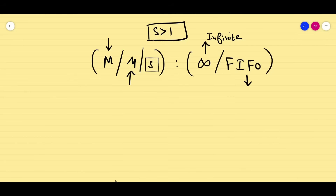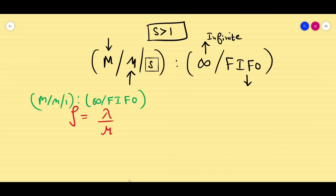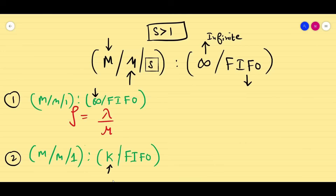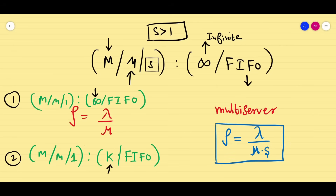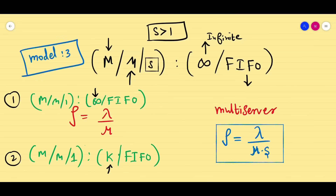Let us see the formulas we are going to use in this topic. In the previous models, rho means lambda by mu — we call it utilization factor or traffic intensity. In model M/M/1/∞/FIFO and M/M/1 with finite capacity, rho equals lambda by mu. But for the multi-server model, the formula is different: rho equals lambda divided by mu times s, where s represents the number of servers. So when using model 3, we cannot use rho equals lambda by mu; instead we use rho equals lambda by mu·s.